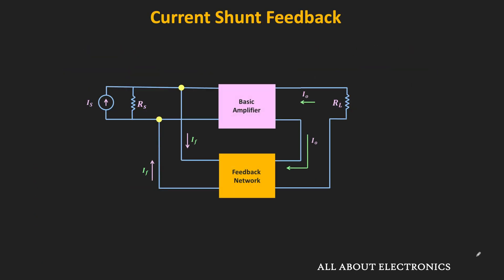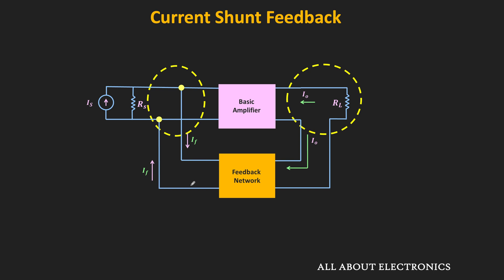So in this current shunt feedback amplifier, we have a basic current amplifier and the feedback network. In the basic current amplifier, since the output is the current signal, to sample this output current on the output side, the feedback network is connected in series with the basic amplifier. And on the input side, since the current signal is the input signal, it is mixed with the input signal via the shunt connection. So this feedback topology is known as the current shunt feedback topology.